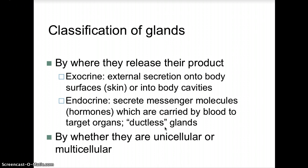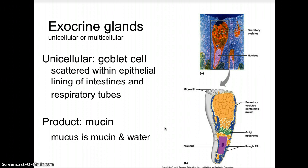Classifying types of glands by where they release their products: exocrine glands secrete externally onto body surfaces such as the skin or into body cavities — examples include the pancreas and mammary glands. Endocrine glands secrete messenger molecules such as hormones, which are carried by blood to target organs — these are also called ductless glands. Glands can also be classified by whether they are unicellular or multicellular.